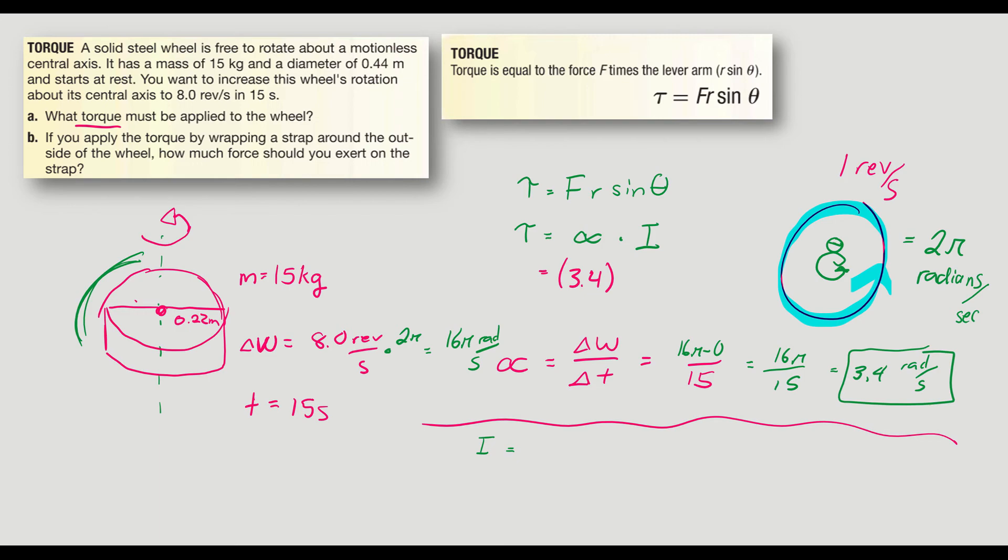In this case, it's 1/2 mr². And so we can go 1/2 times the mass of the wheel, they said is 15. The radius then of the wheel, the radius of the cylinder, that's 0.22. We already established that. It's 0.22 squared. And that's going to end up with 0.36 kilograms times meters squared.